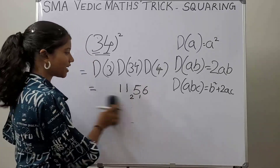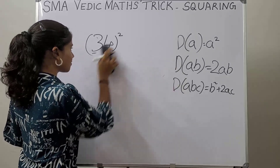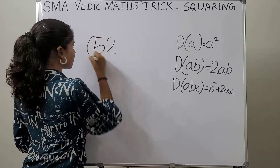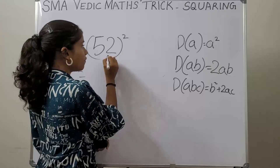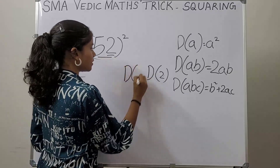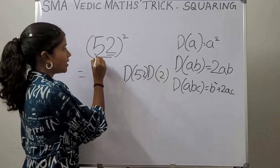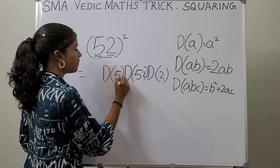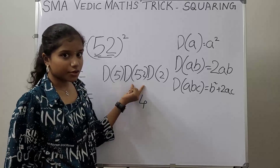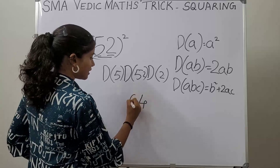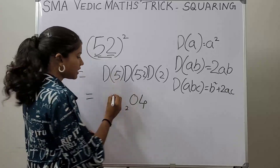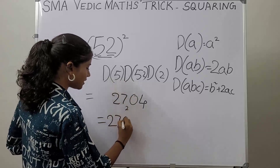Now let's take one more example: 52². We write duplex of 2, duplex of 52, duplex of 5. Duplex of 2 is 4 — write 4. Duplex of 52 is 2×5×2 = 20 — write 0, carry 2. Duplex of 5 is 25, plus carry 2 = 27. So our answer is 2704.